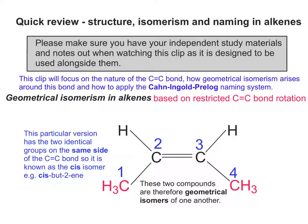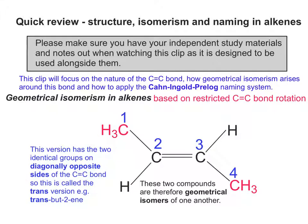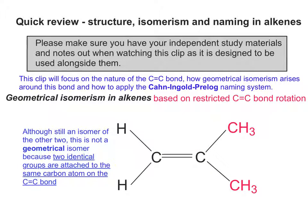This particular version has the two identical groups on the same side of the carbon-carbon double bond, so it's known as the cis isomer — for example, cis-but-2-ene. This version has the two identical groups on opposite sides of the carbon-carbon double bond, so it's called the trans version — for example, trans-but-2-ene. This third version is still an isomer of the other two, but it's not a geometrical isomer because two identical groups are attached to the same carbon atom on the double bond. The name of this compound is methylpropene.